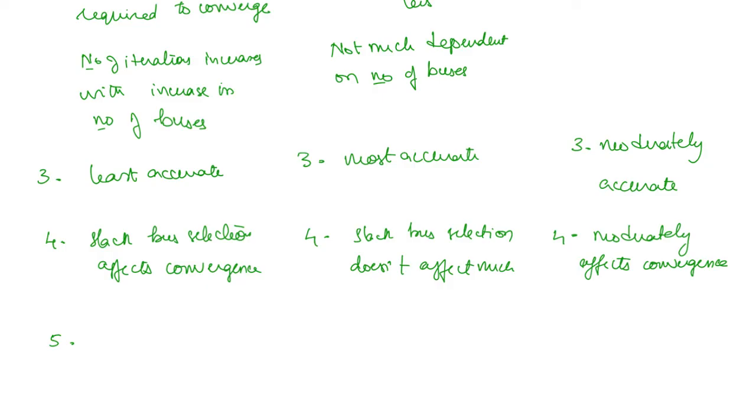The fifth point is the programming logic is easy. We have to write a program for the computer to execute. That programming logic is easier to write for the Gauss-Seidel method. Here in the Newton-Raphson method it is going to be a little hard. Programming logic is hard. The fast decoupled method also has hard programming logic.